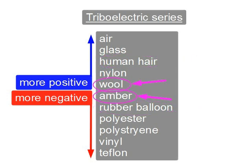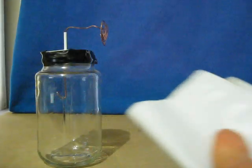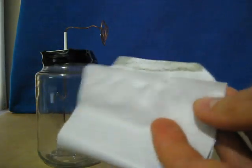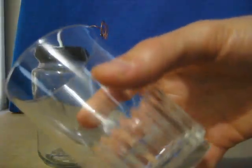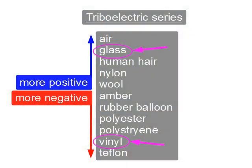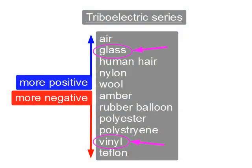But amber and wool are very close together and won't work well at all. Here's a piece of vinyl which I cut from some old window blinds, and here's a glass. You can see that the vinyl and glass are far apart in the triboelectric series, so they should work well together.